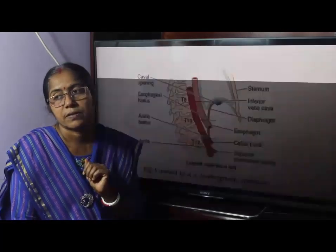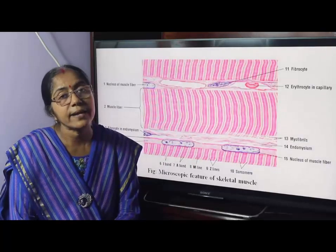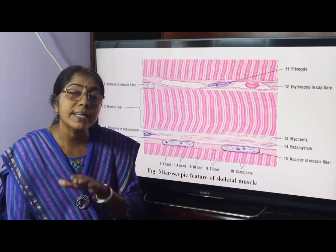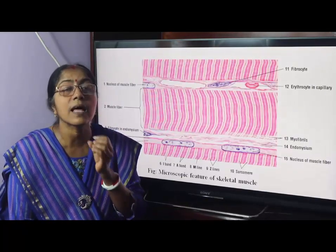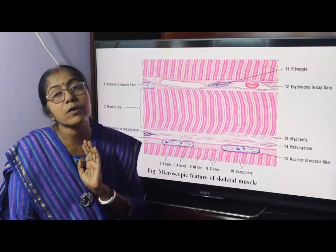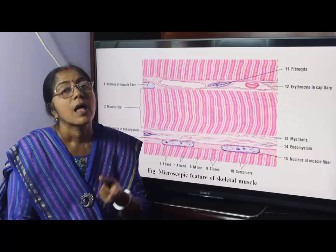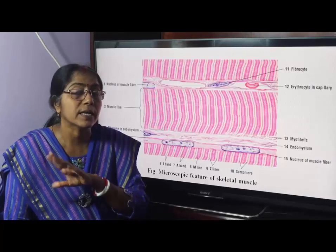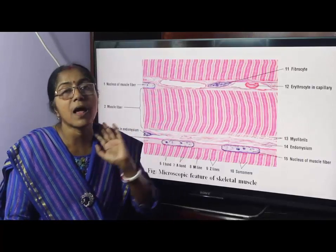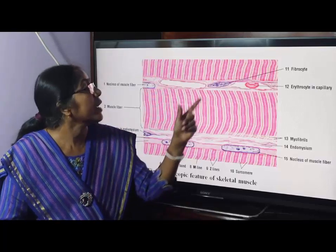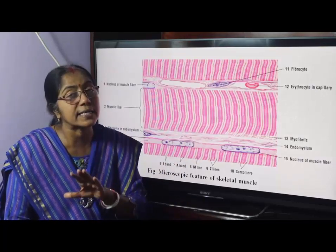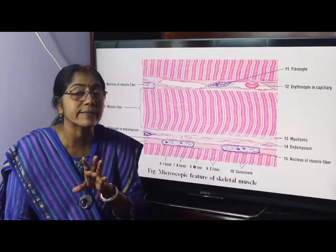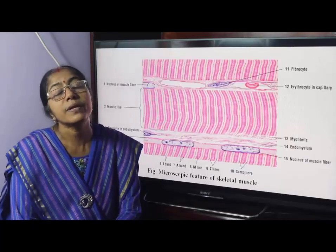Since the diaphragm is a skeletal muscle, how do you identify skeletal muscle under the microscope? The microscopic features of skeletal muscle are: first, long cylindrical muscle fibers without branching; second, multiple peripheral nuclei are present; third, distinct cross-striations. These features allow identification of skeletal muscle under the microscope.